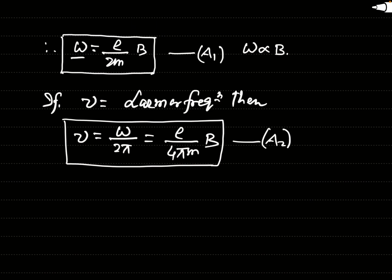This Larmor frequency will be used many times in the forthcoming lectures. We call this ν the Larmor frequency, and this result is known as Larmor theorem. This Larmor theorem is very important in atomic physics and in dealing with atomic structure, because whenever you want to find the energy levels of an atom in the presence of an external magnetic field, you must apply this concept. Larmor precession is a very important and useful concept to deal with atomic structure in the presence of a magnetic field.